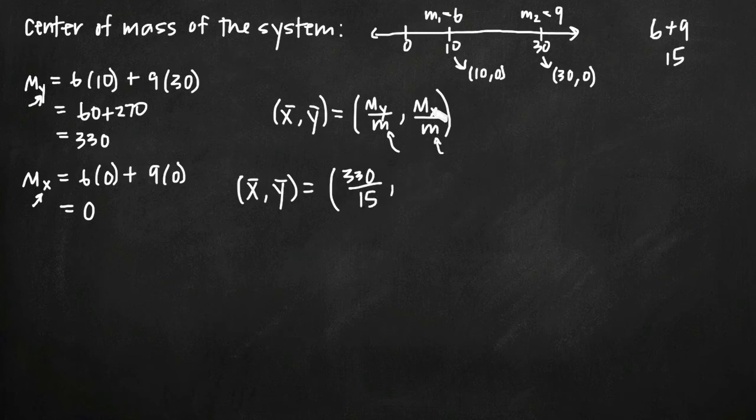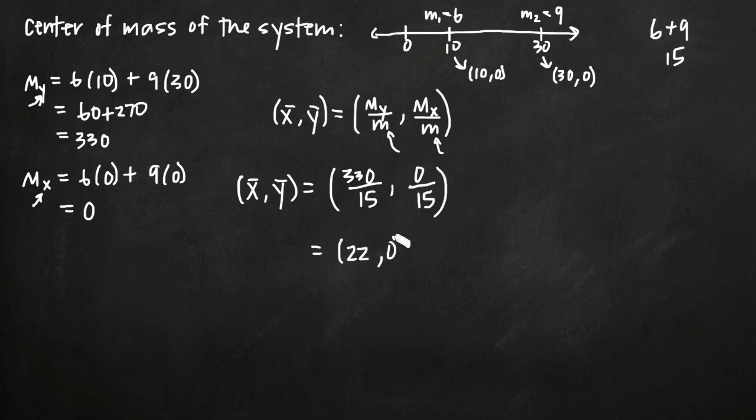Then to get the y coordinate of the center of mass, we take m sub x, which is 0, and divide that by total mass, again 15. And then we just simplify, so 330 over 15 is 22. So 22, and then of course 0 over 15 is 0.